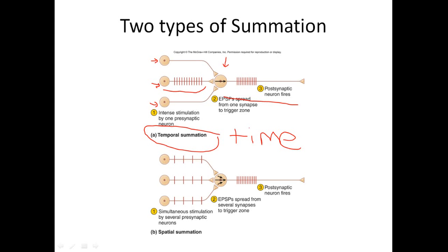The other type is spatial summation — summing over space. More than one pre-synaptic neuron sends a signal at the same time to the post-synaptic neuron. Like my son and all his friends each asking for a snack — it's coming from several different sources, eventually reaching threshold and causing the action potential. Summation occurs at the axon hillock.